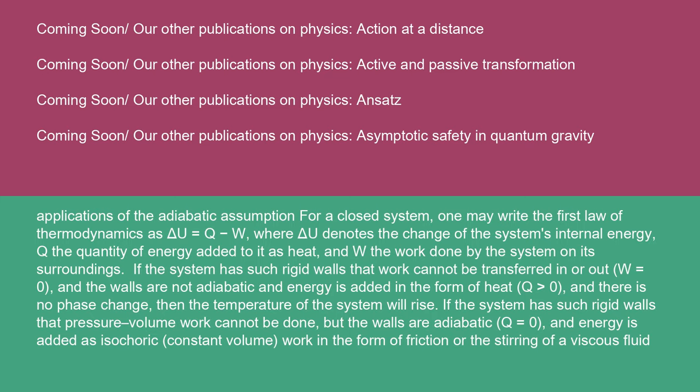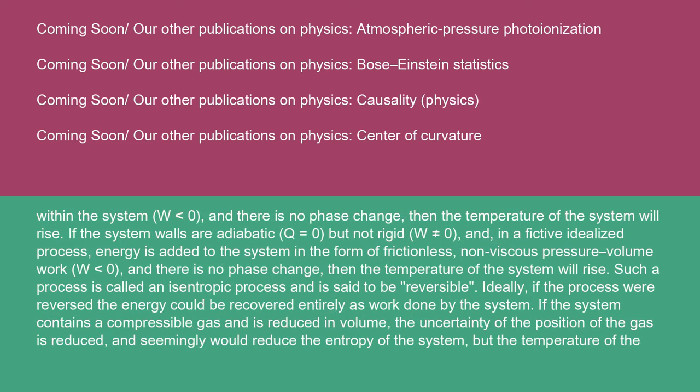If the system has such rigid walls that pressure-volume work cannot be done, but the walls are adiabatic (Q = 0), and energy is added as isochoric (constant volume) work in the form of friction or the stirring of a viscous fluid within the system (W < 0), and there is no phase change, then the temperature of the system will rise.